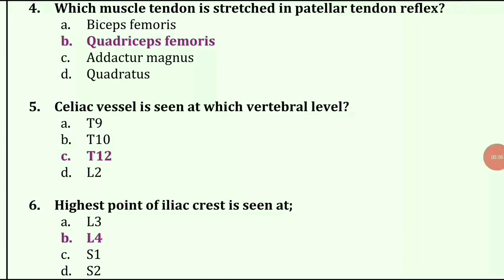Celiac vessel is seen at which vertebral level? Answer is T12. Highest point of iliac crest is seen at L4.